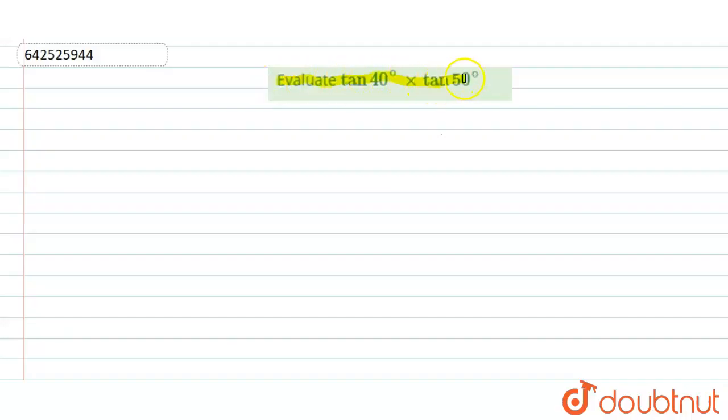Tan 40 degree into tan 50 degree is equal to... Here in the question it's given tan of 40 degree into tan of 50 degree.